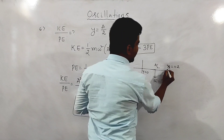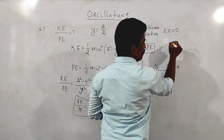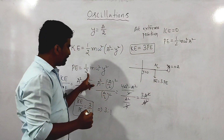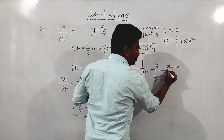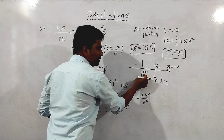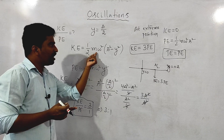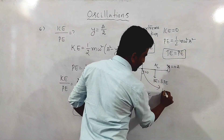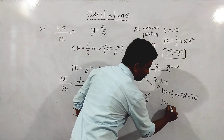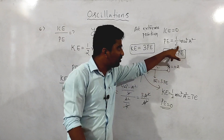At the extreme position, kinetic energy is equal to 0. At the extreme position, total energy is nothing but potential energy only. At the mean position, kinetic energy is half m omega squared a squared, which is equal to the total energy, while the potential energy is equal to 0. So at extreme position, total energy is only potential energy — there is no kinetic energy at the extreme position.